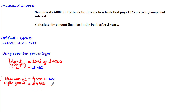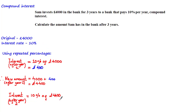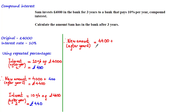To work out the interest after year two, because this is compound interest, we take 10% of £4,400 — the amount in her account at the time. This is different from simple interest, where we would again take 10% of the original amount. 10% of £4,400 equals £440, so the new amount after year two is £4,400 plus £440, which equals £4,840.